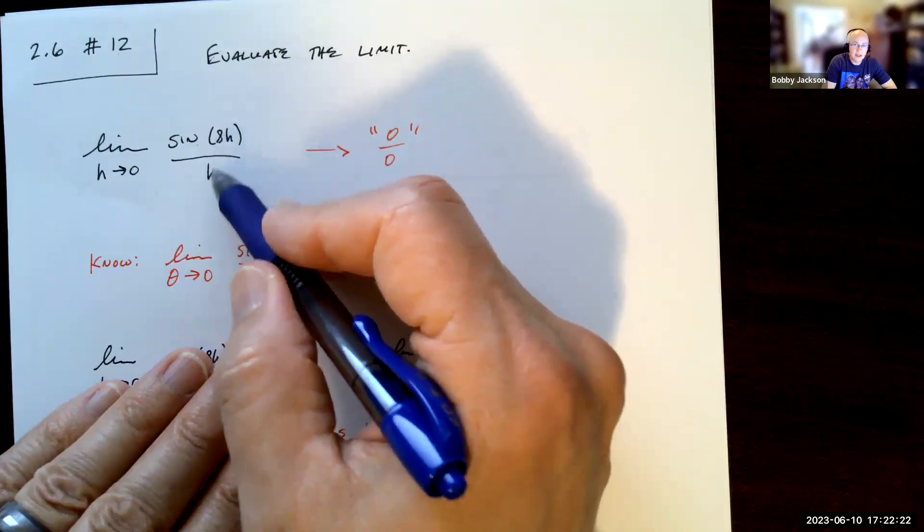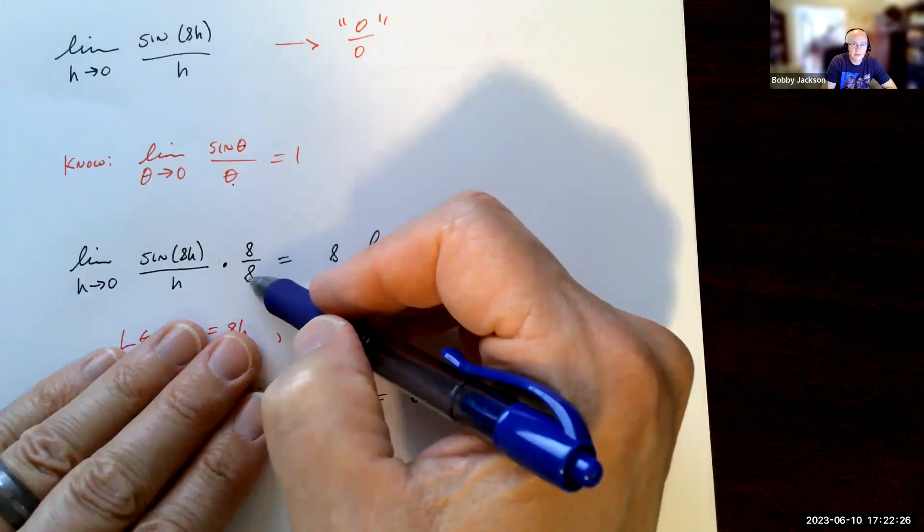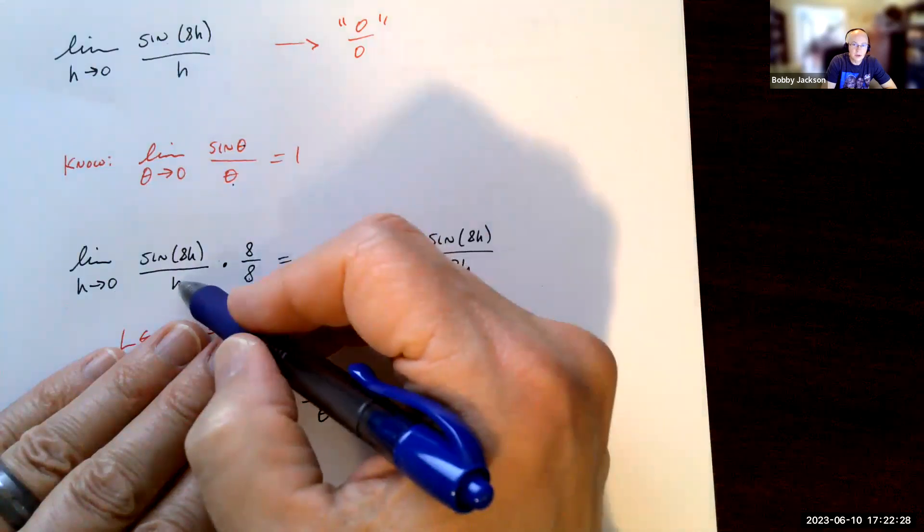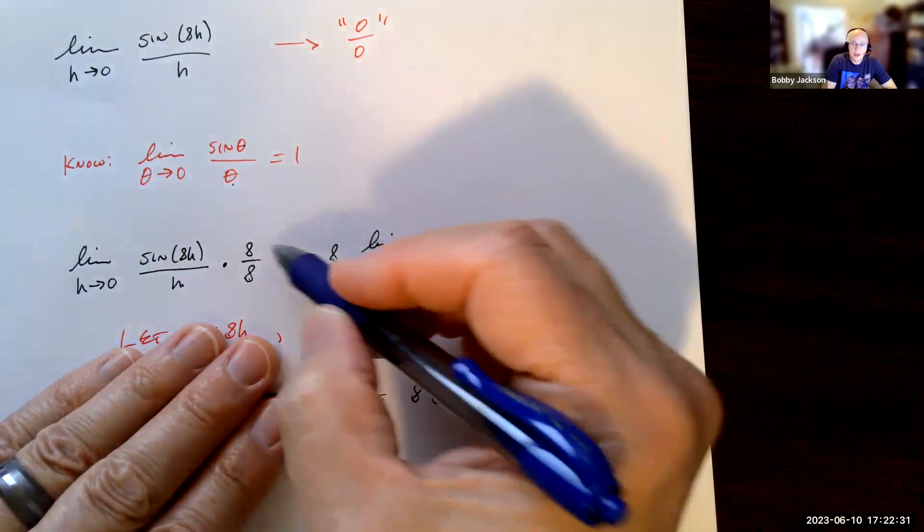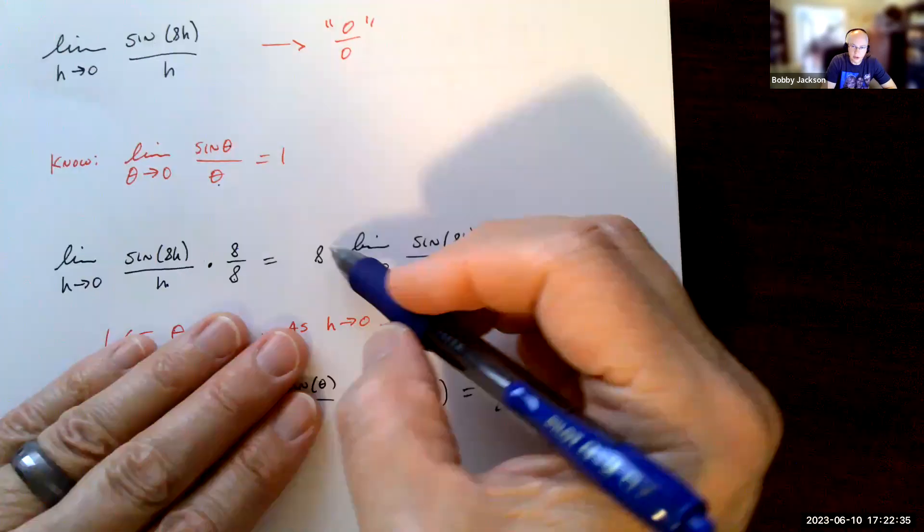But I can make, since this is 8h in here, I can make this an 8h by multiplying top and bottom by 8. And this 8 will go with this 8 to give me 8h. This 8 I'll pull outside the limit, which I can do provided this resulting limit exists, and this limit exists.